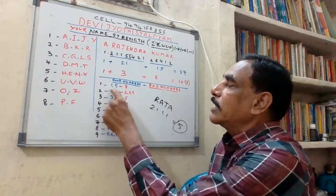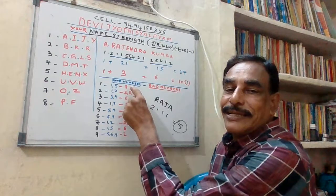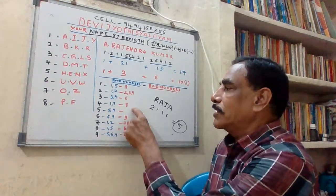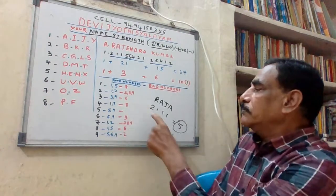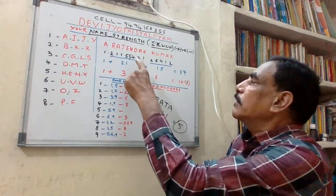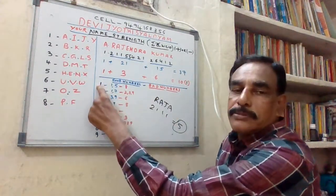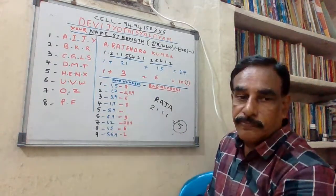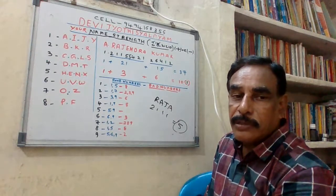For number 1, lucky numbers are 1 and 5, bad number is 8. I represent bad numbers in red color. Since my name strength is 1, it is positive. Raja is also 5, so it is also positive. Like that you have to understand.